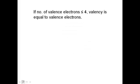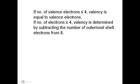If the number of valence electrons are less than 4, then the valency is equivalent to the valence electrons. What are valence electrons? Valence electrons are the number of electrons present in the outermost shell. But if the number of valence electrons are greater than 4, then the valency can be determined by subtracting the number of outermost shell electrons from 8.